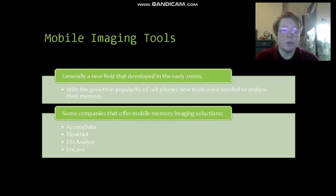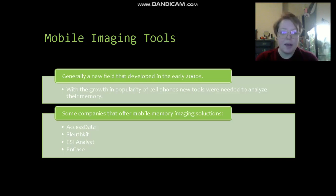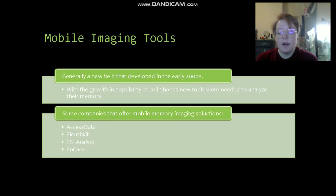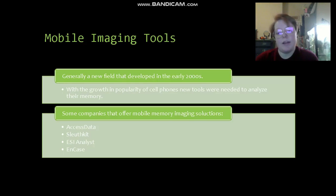Now we're going to talk about mobile imaging tools. This is generally a new field developed in the early 2000s. With the growth and popularity of cell phones, new tools were needed to analyze their memory. You can't just plug a phone into standard disk imaging software because the tool will generally not understand the storage structure of the phone. Some companies now offer mobile memory imaging solutions — AccessData and EnCase, which we saw before, also offer mobile solutions. New names in this space include Sleuth Kit and ESI Analyst.